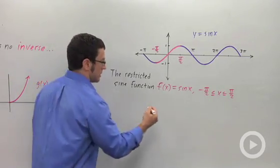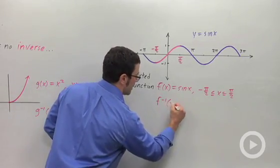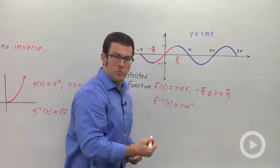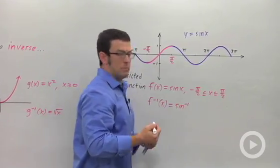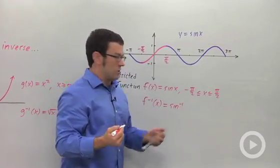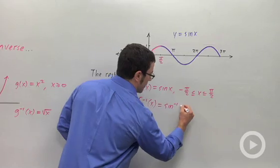The inverse of this function is written inverse sine. This negative 1 superscript is not an exponent, neither here nor here. It's actually a symbol for the inverse of the function sine. So make sure you remember that.